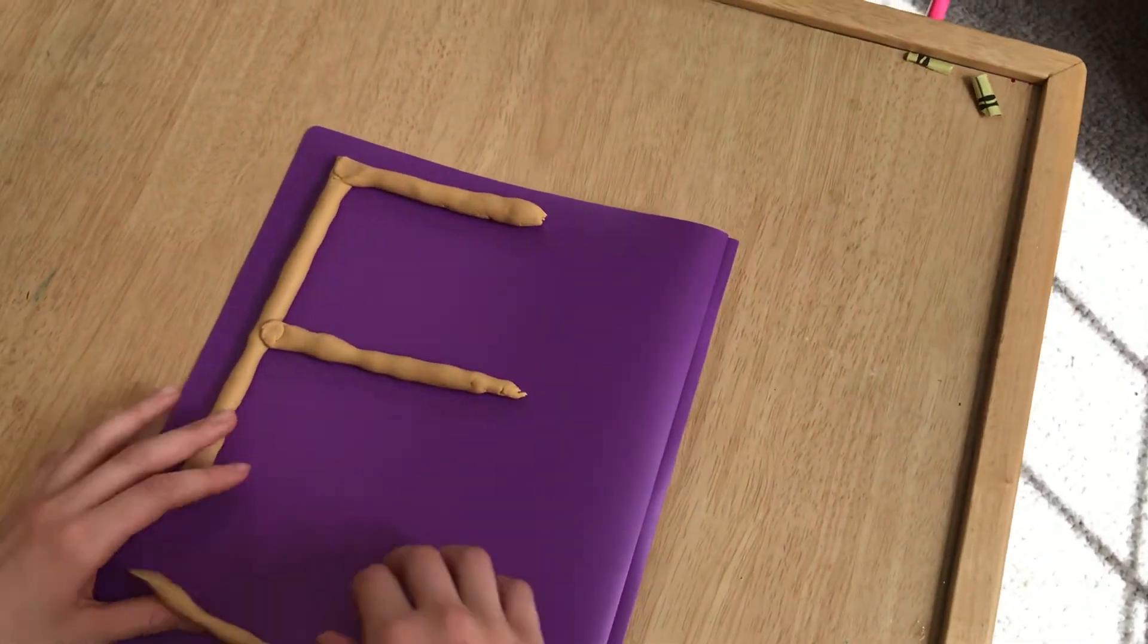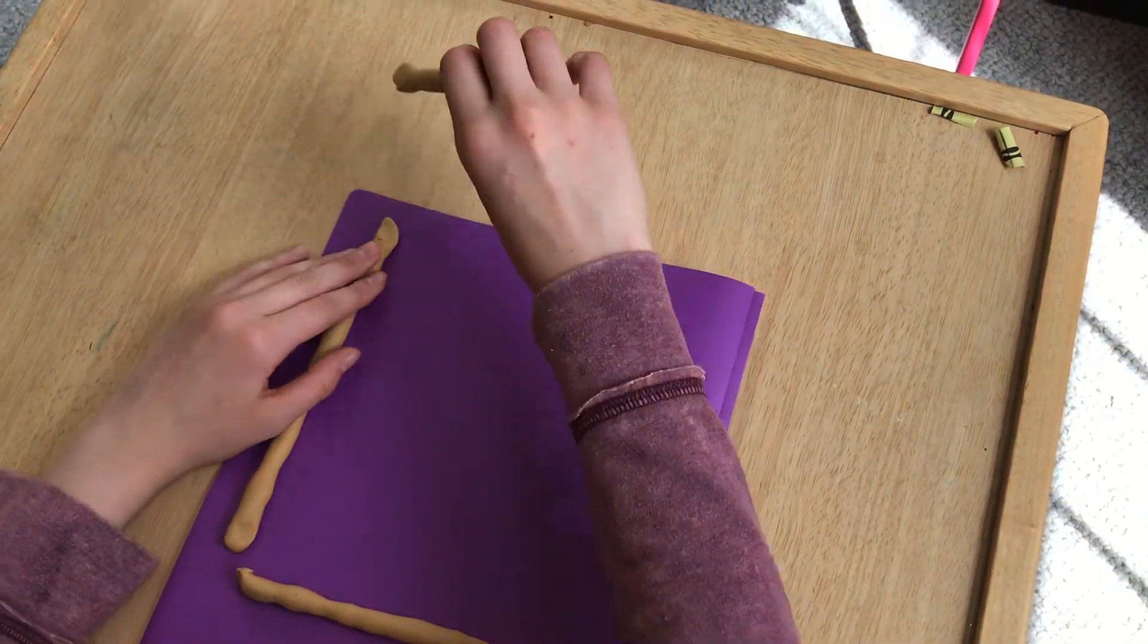Let's try to make a different letter. We know that frog jump letters, the capital ones, start with a big line down. So we can keep our big line down.